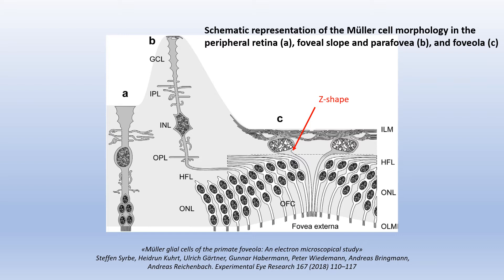Müller cells in the foveal slope and parafovea display a Z-shape because of the elongation of their outer processes, which run more or less horizontally through the Henle fiber layer. The somata of Müller cells in the foveola lie in the innermost layer. The thin inner processes of these cells form an elaborated plate along and below the inner limiting membrane and surround the cytoid spaces in this layer. The outer processes run through the outer nuclear layer of the foveola up to the outer limiting membrane, and the cytoplasm of these processes becomes increasingly dispersed.